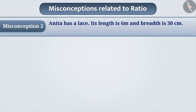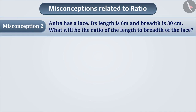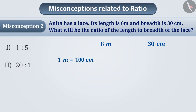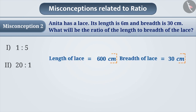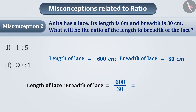Misconception 2. Anitta has some lace. Its length is 6m and breadth is 30cm. Find the ratio of length to breadth of the lace. To find the ratio of two quantities, we first need to convert them into the same units. Here, we will represent both units in centimetres. Since 1m is equal to 100cm, 6m is equal to 600cm. Therefore, the length of the lace is 600cm and the breadth is 30cm. Since both quantities have the same units, the ratio of length to breadth is 600 by 30, which is equal to 20 is to 1.